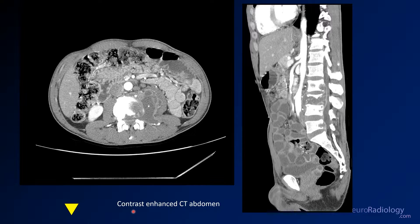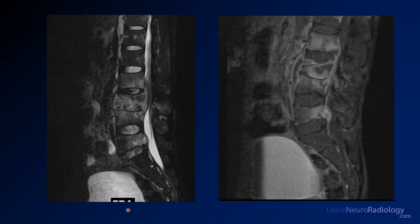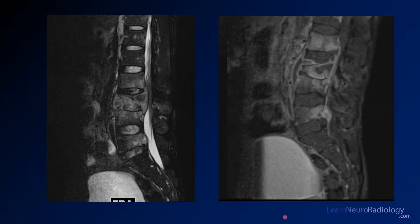There are some findings in the spine, so take a look at those. Because of that study, they went on to get an MRI of the lumbar spine. These are T2 on the left and T1 post-contrast on the right, and you can see findings that correspond to those abnormalities on CT.